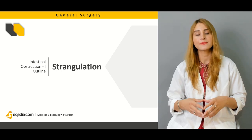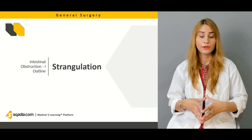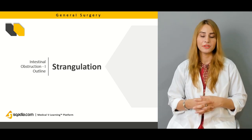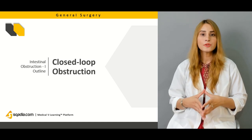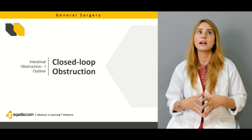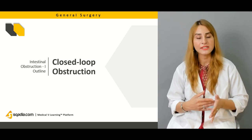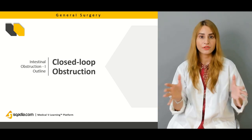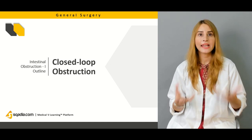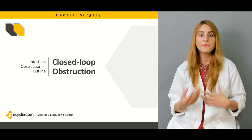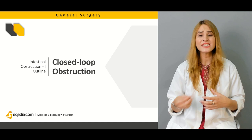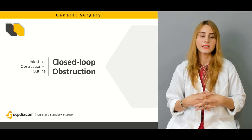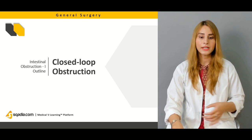We'll be talking about strangulation because most of the time hernias present with obstruction or strangulation, and they are basically surgical emergencies. We'll also be talking about closed loop obstruction — when a proximal segment and a distal segment are both obstructed, the portion of gut in between is dilated, causing a closed loop obstruction. In case of closed loop obstruction, resecting or relieving the obstructed segment relieves the obstruction.